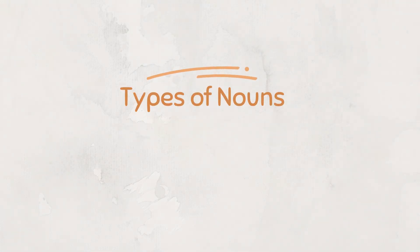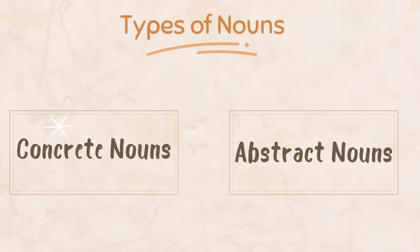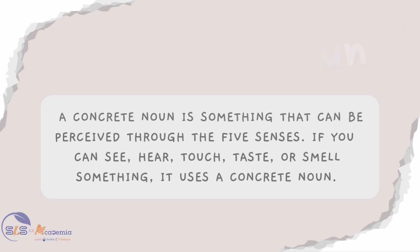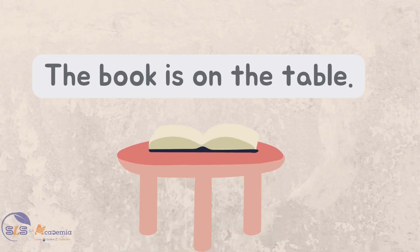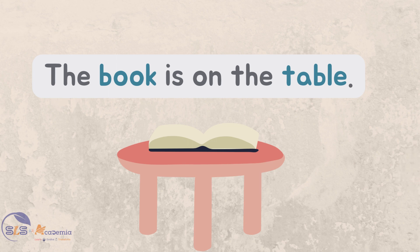The first type of classification: nouns can be divided into concrete nouns and abstract nouns. A concrete noun is something that can be perceived through the five senses. If you can see, hear, touch, taste or smell something, it is a concrete noun. For example, in the sentence 'the book is on the table,' the words book and table can be perceived through our five senses — we can touch a book and table, we can see them, hear them and also feel them. So the words book and table are examples of concrete nouns.